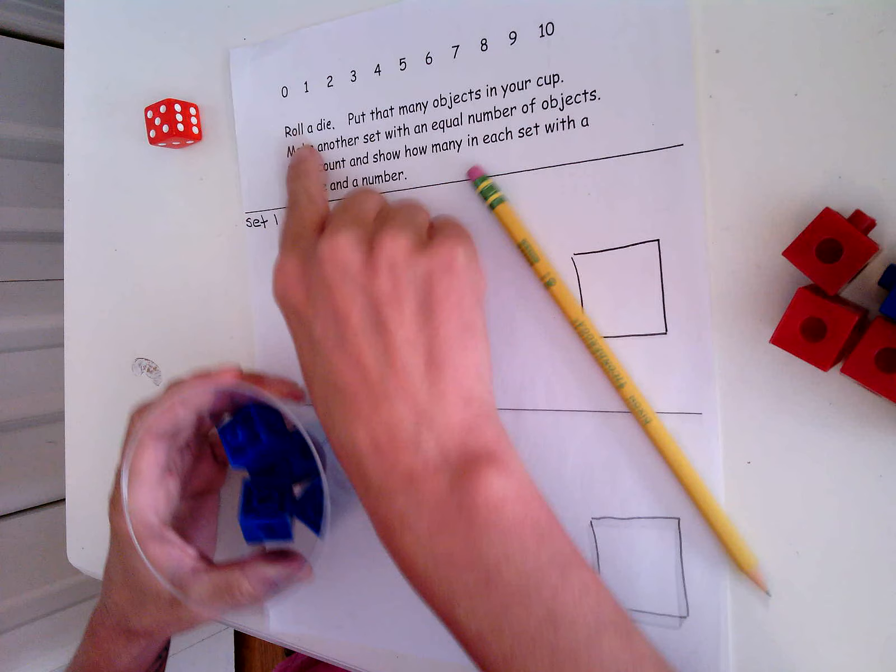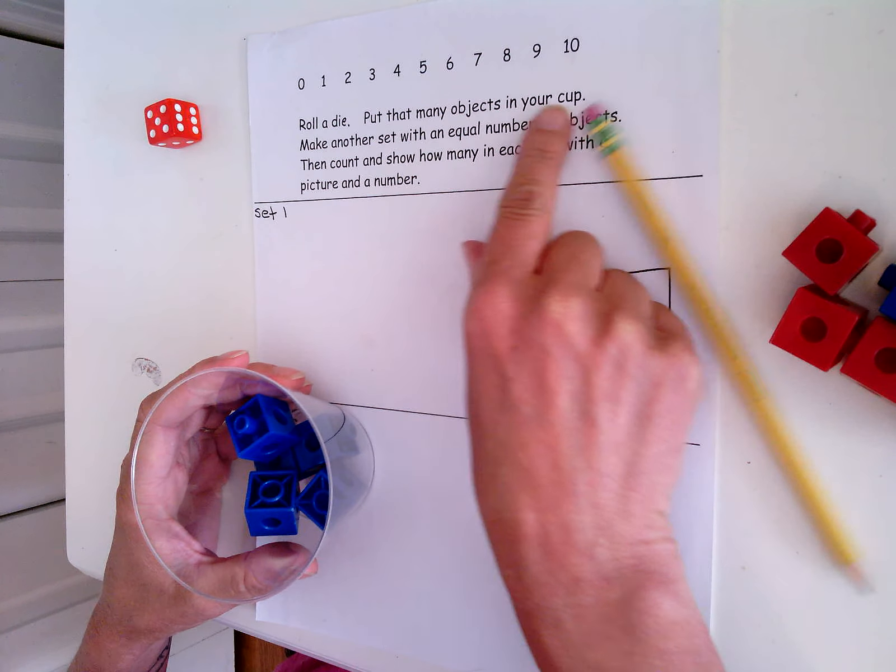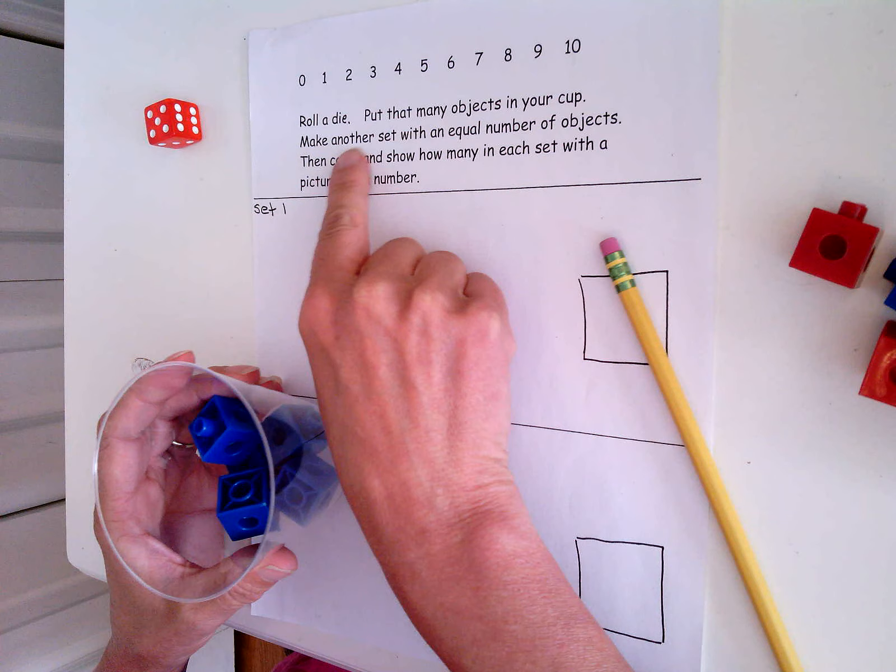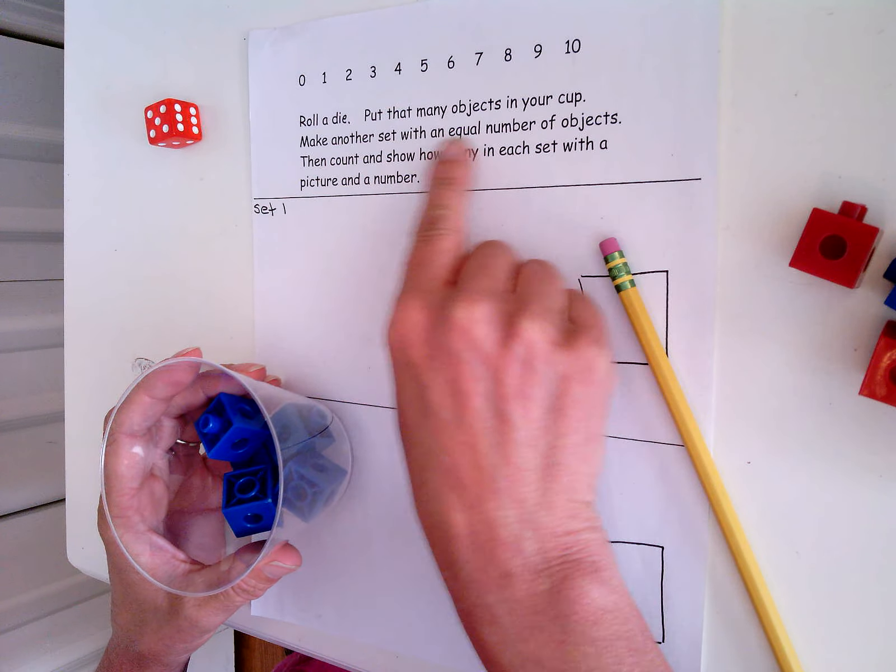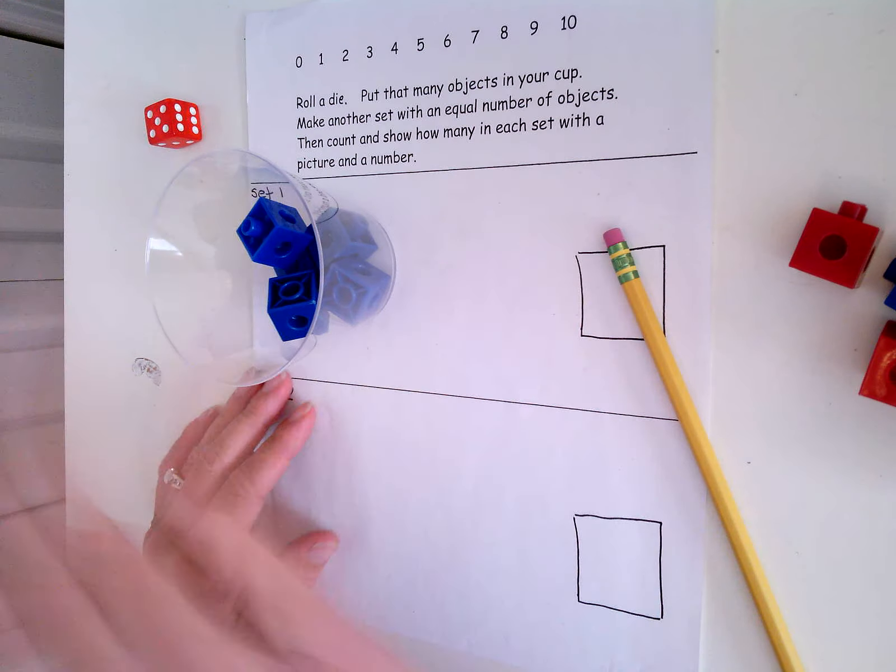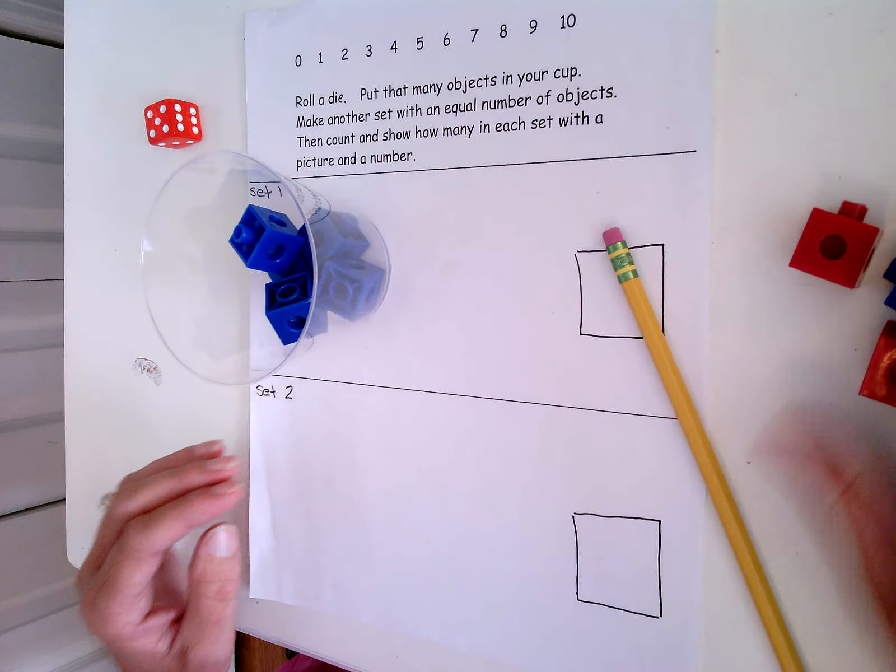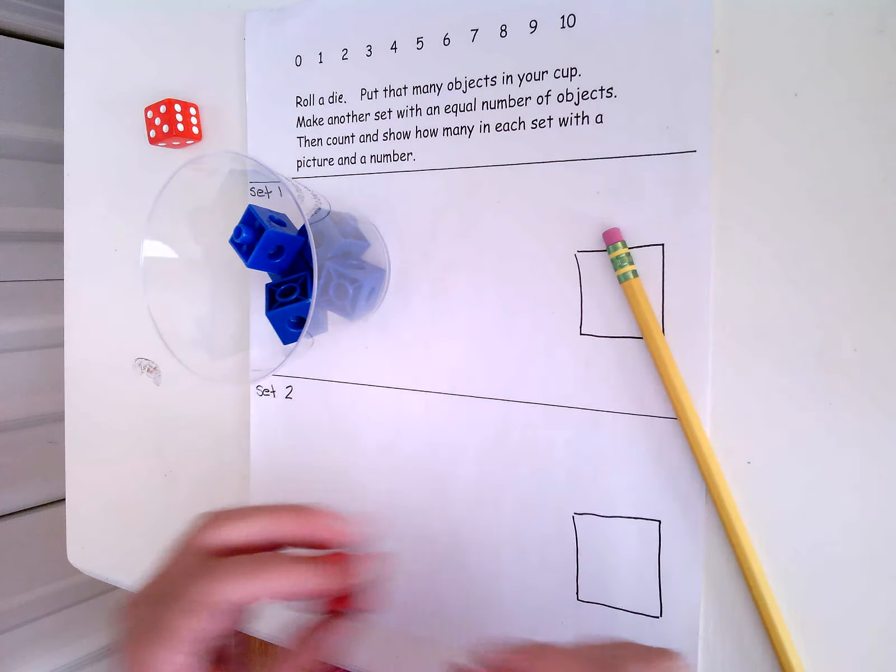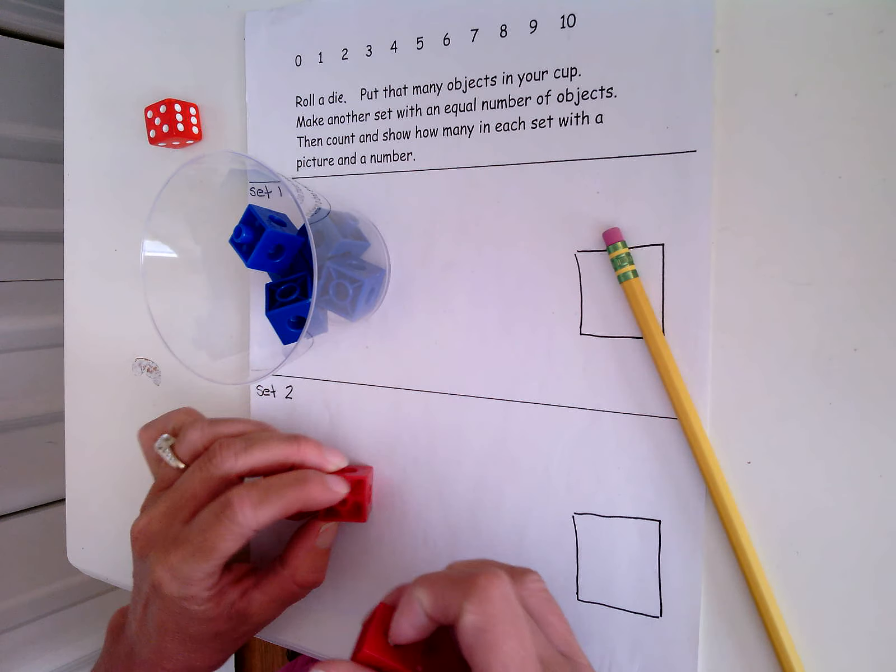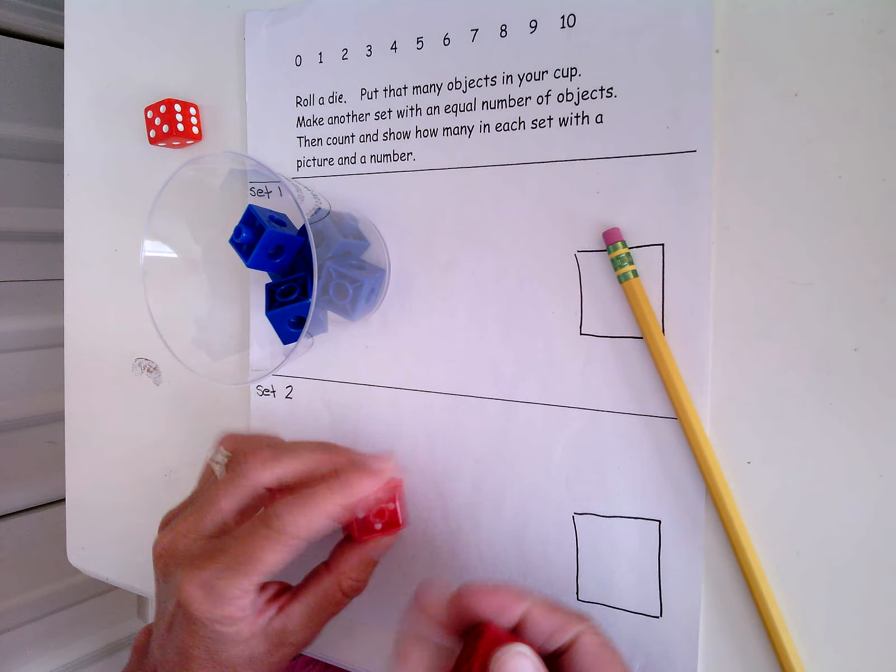I've done that. Make another set with an equal number of objects. So if I have this many in my cup, five, I'm going to make another set with an equal number of objects down here. One, two, three, four, five.